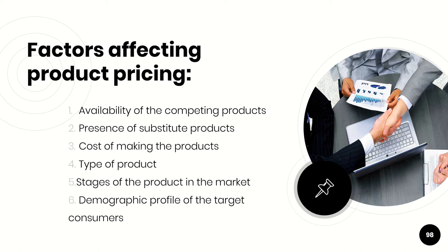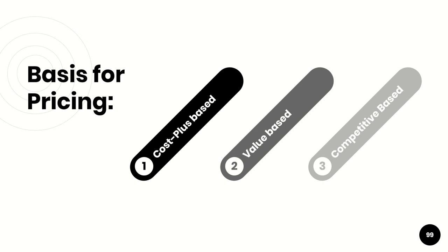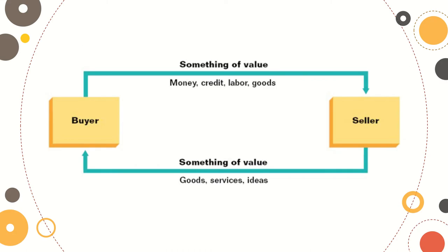The sixth factor is the demographic profile of the target consumers. Whether your consumers are high-class or price-sensitive is one of the things that affects their decision-making. Now, for the three bases of pricing, we have: first, cost-plus base; second, value base; and third, competitive base. But before we go into that, let me show you something.